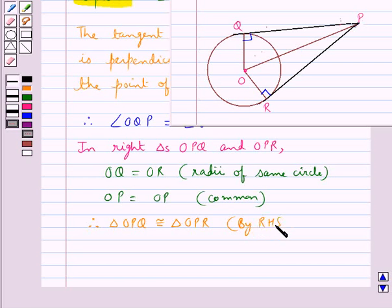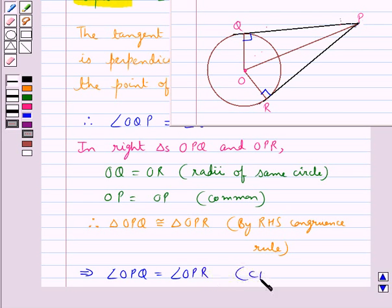by the RHS congruence rule stated in the key idea. Now since both these triangles are congruent, this would mean that angle OPQ is equal to angle OPR as they are the corresponding parts of congruent triangles, so these two angles would be equal.